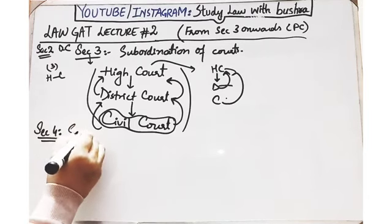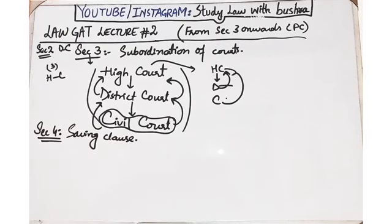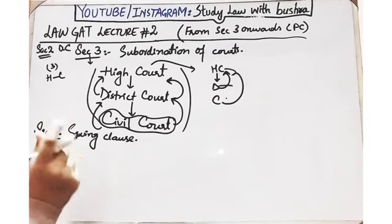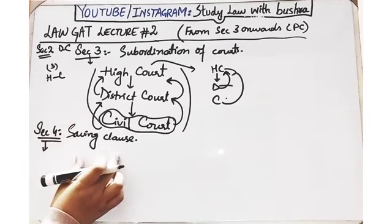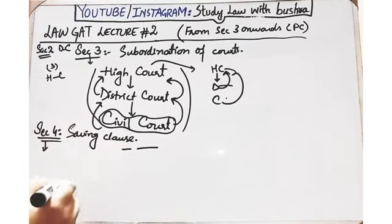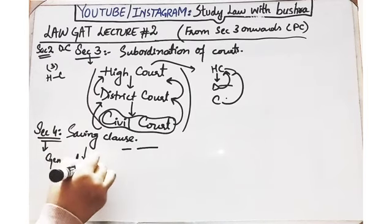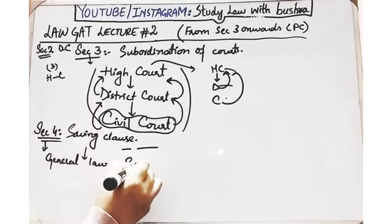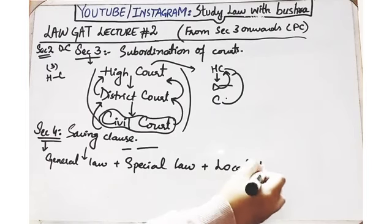उसके बाद आता है Section 4, जो basically saving clause के साथ deal कर रहा है। Saving clause में हमेशा लिखा जाता है 'save as otherwise provided' — यानि अगर किसी और कानून में कुछ लिखा गया है तो वो applicable होगा। इस section का start देखें तो इसमें लिखा है 'in the absence of any specific provision to the contrary' — और आगे तीन चीज़ें बताई हुई हैं।